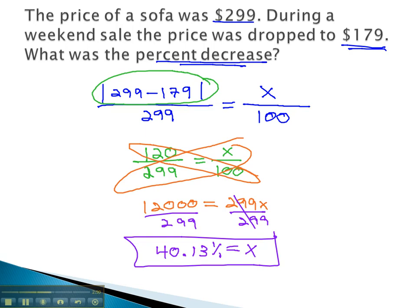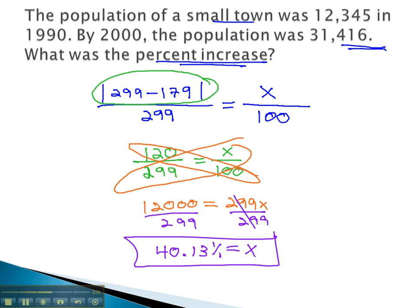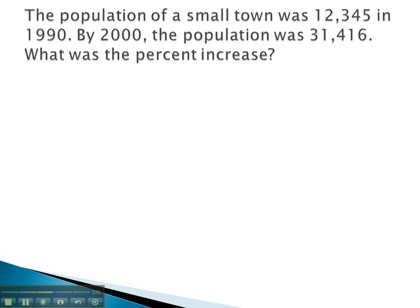Let's try another example. In this problem, the population of a town goes from 12,345 to 31,416. We want the percent increase. And again, there's that key phrase that tells us to do the absolute value of the difference over the old equals percent over 100.